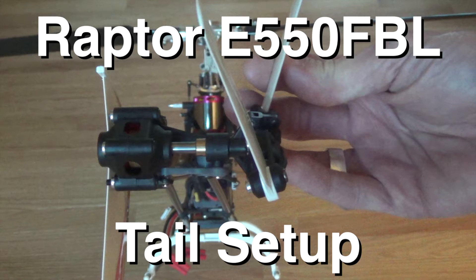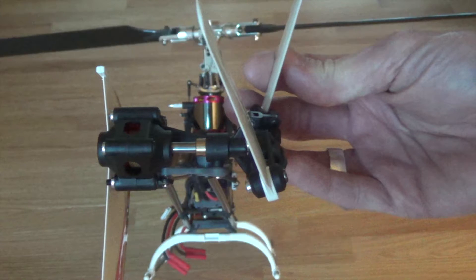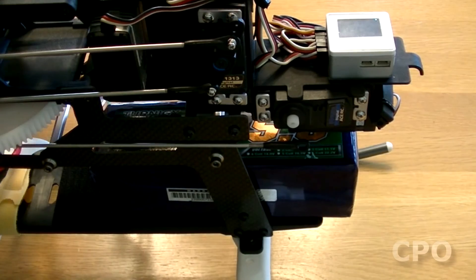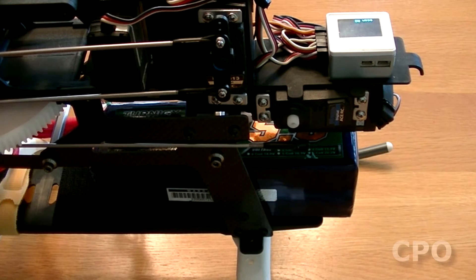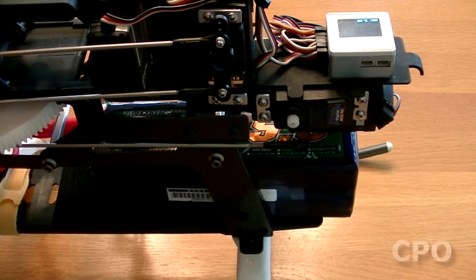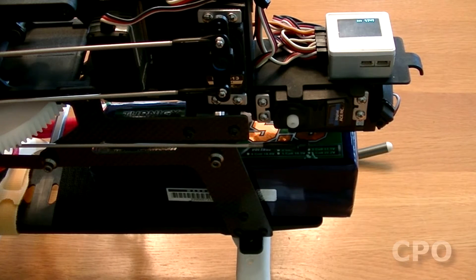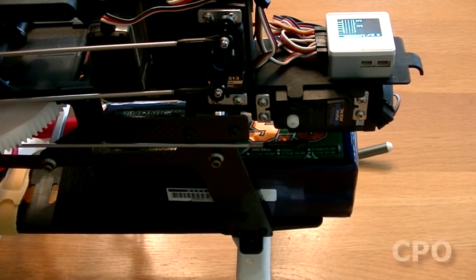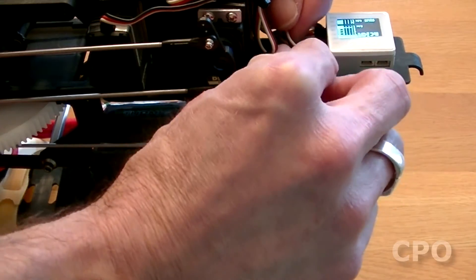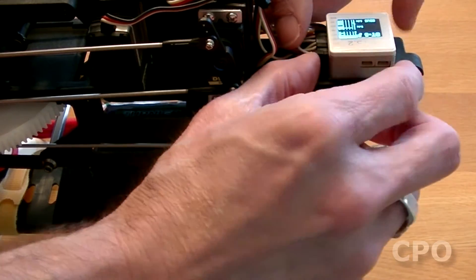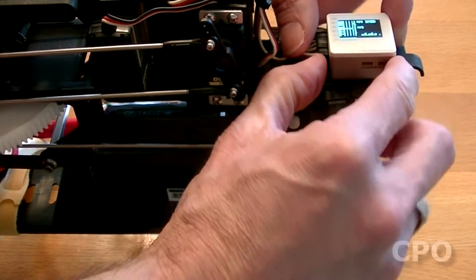We're going to pick up where we left off in the last video where we set up the head, so go ahead and get your transmitter turned on, power up your heli, and get your flybarless controller put into programming mode, either through the interface by going into your menu, or by going into the GT5 tools, which is what I'm going to use here for most of this.